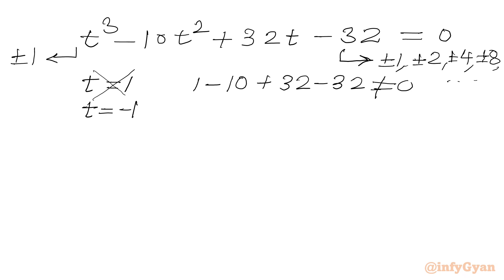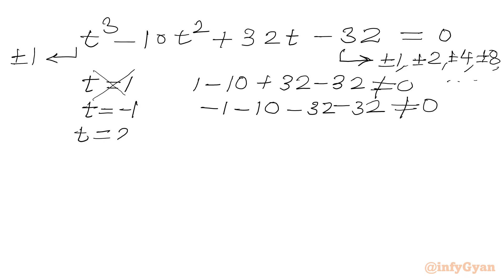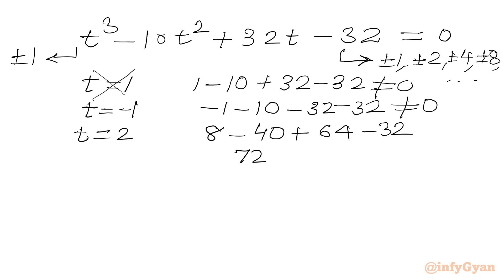Now I will plug in t equal to negative 1 to check whether it satisfies the equation. Minus 1 cubed is minus 1, minus 10 times minus 1 squared gives minus 10, plus 32 times minus 1 is minus 32, minus 32. It is not satisfying the equation. Now we will plug in t equal to 2. 2 cubed is 8, minus 10 times 2 squared is 40, plus 32 times 2 is 64, minus 32. So 8 plus 64 is 72, minus 40 minus 32 is minus 72.